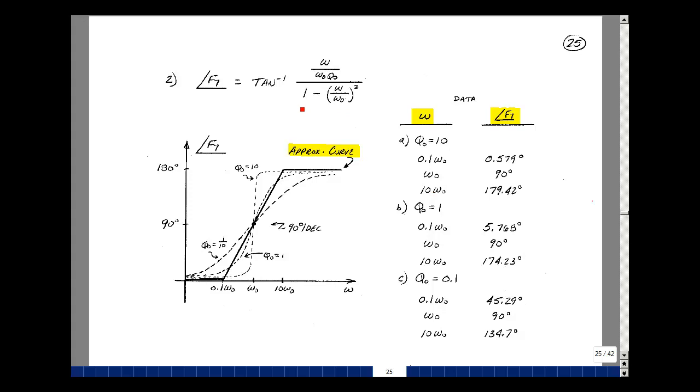When omega equals omega naught, the denominator equals 1 minus 1 squared. No matter what the values of q naught, we're approaching infinity. The arctangent of infinity is 90 degrees. So each of the three cases here pass through a single point at 90 degrees when omega equals omega naught.